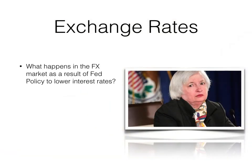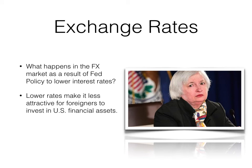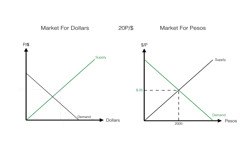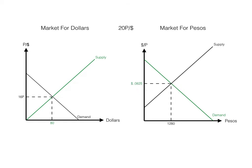What happens in the foreign currency market as a result of Fed policy to lower interest rates in the U.S.? This would be expansionary monetary policy. The lower rates make it less attractive for foreigners to invest in U.S. financial assets. Expansionary Fed policy leads to a lower interest rate in the U.S. relative to other countries, and U.S. residents now want to hold more foreign assets as opposed to U.S. assets. You have a decrease in the demand for dollars because foreigners do not want to hold dollars, and a decrease in the supply of pesos because they're not wanting to buy so many U.S. financial assets. The exchange rate goes from 20 pesos per dollar to 16 pesos per dollar — or 6.25 cents per peso.